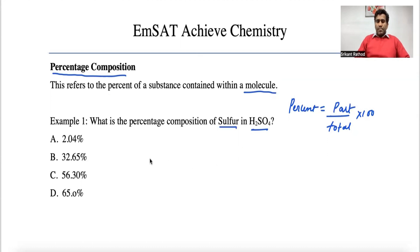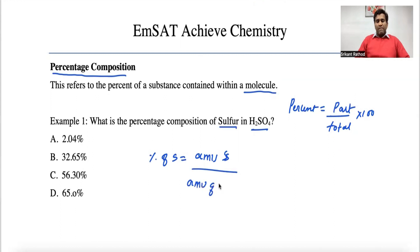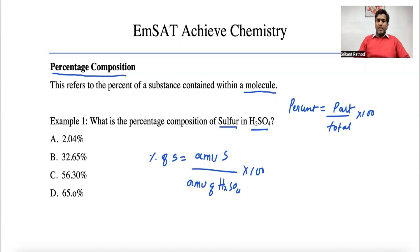The percentage composition of sulfur can be written as: atomic mass unit of sulfur divided by the atomic mass unit of H₂SO₄, multiplied by 100. The weight of sulfur comes from the periodic table, which will be given to us. Let's find the atomic mass unit — also called atomic weight or AMU — of sulfur.